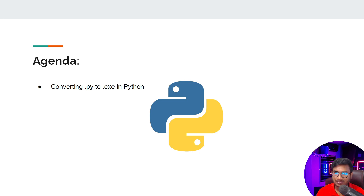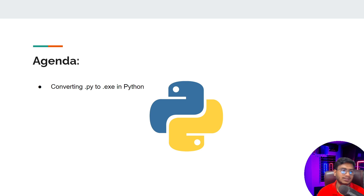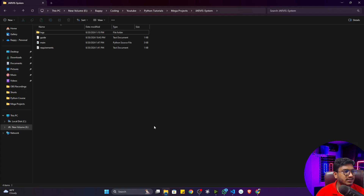So we don't need to install any packages or open any code — just double-click the executable file and use the software. I'll show you practically so it becomes clear. Here we'll see how we can convert any Python file to an executable file so that other people can run your application without installing anything. We have a project called the Jarvis system — let's use that as our demo.